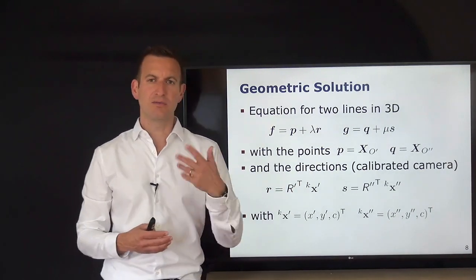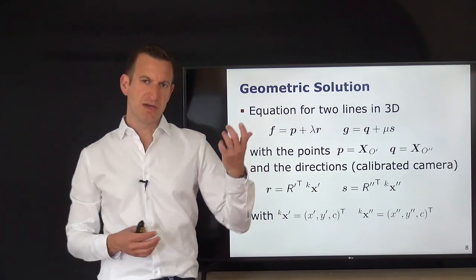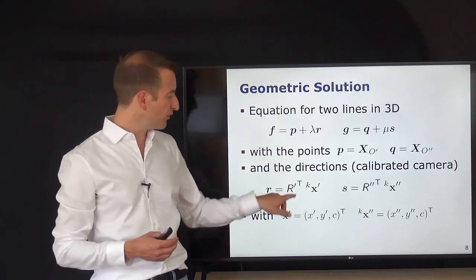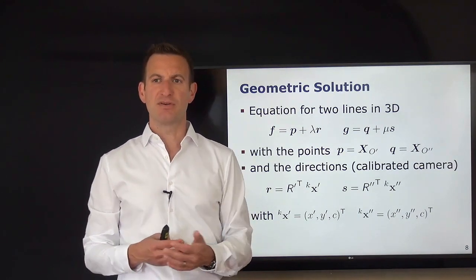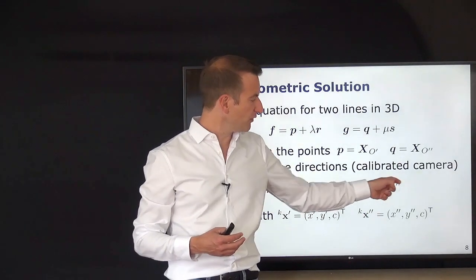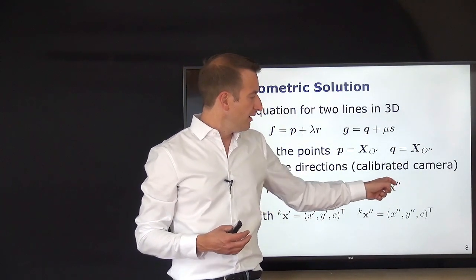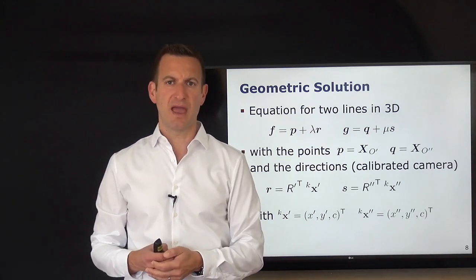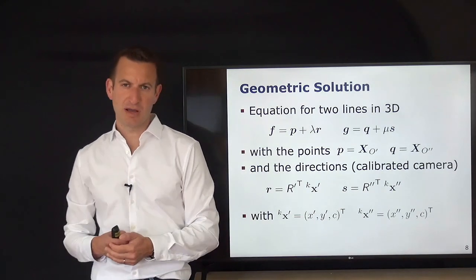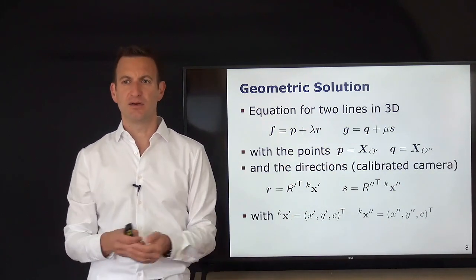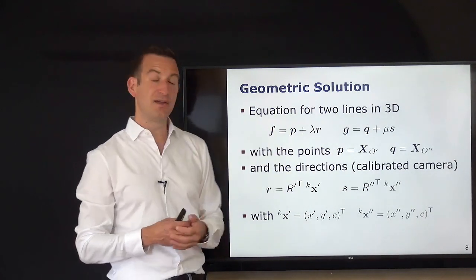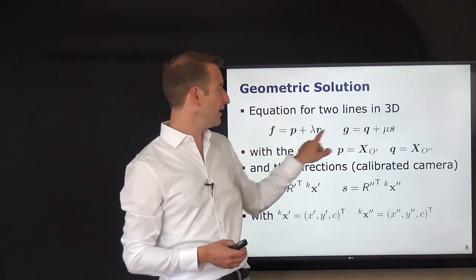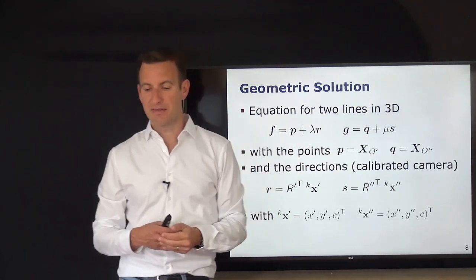The camera constant and the pixel coordinate in the camera coordinate system already give me the direction vector; I only need to take the rotation of the camera into account via R prime and R double prime. So I perform the rotation to be in my world reference frame. Then I have my two line equations where F and G — the resulting points on those lines — depend only on my two unknowns lambda and mu, with all other parameters determined.